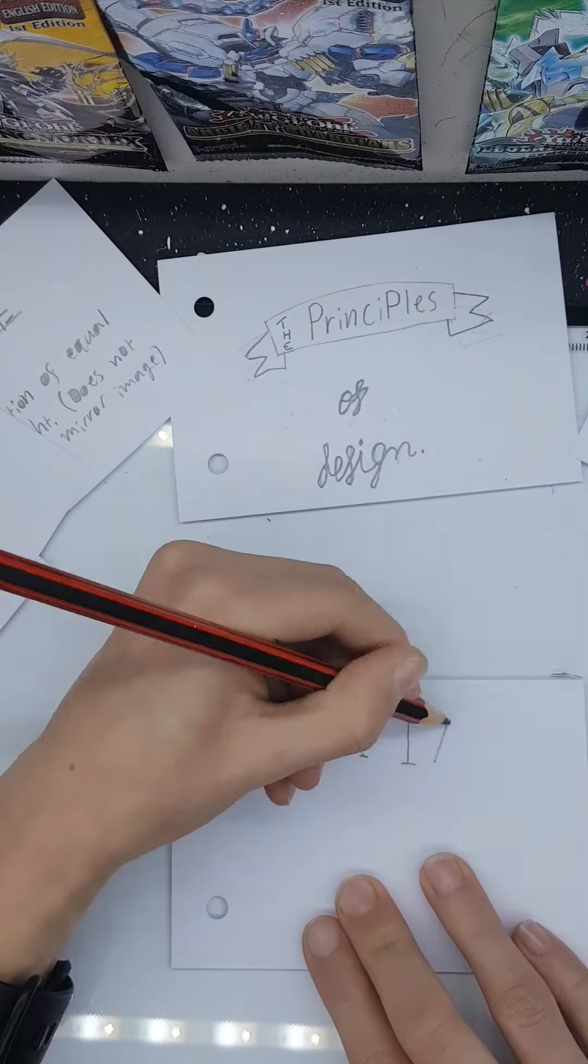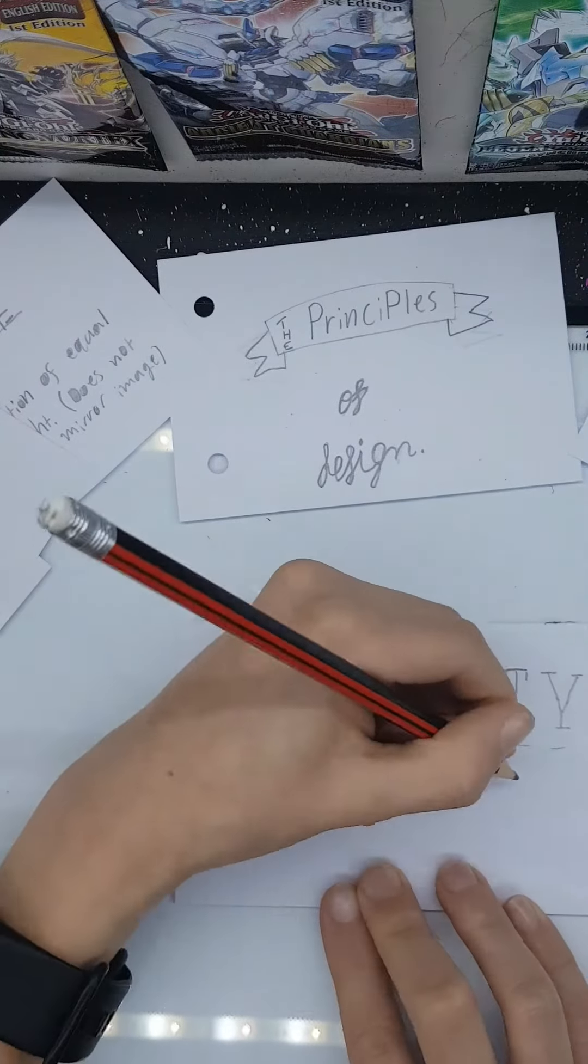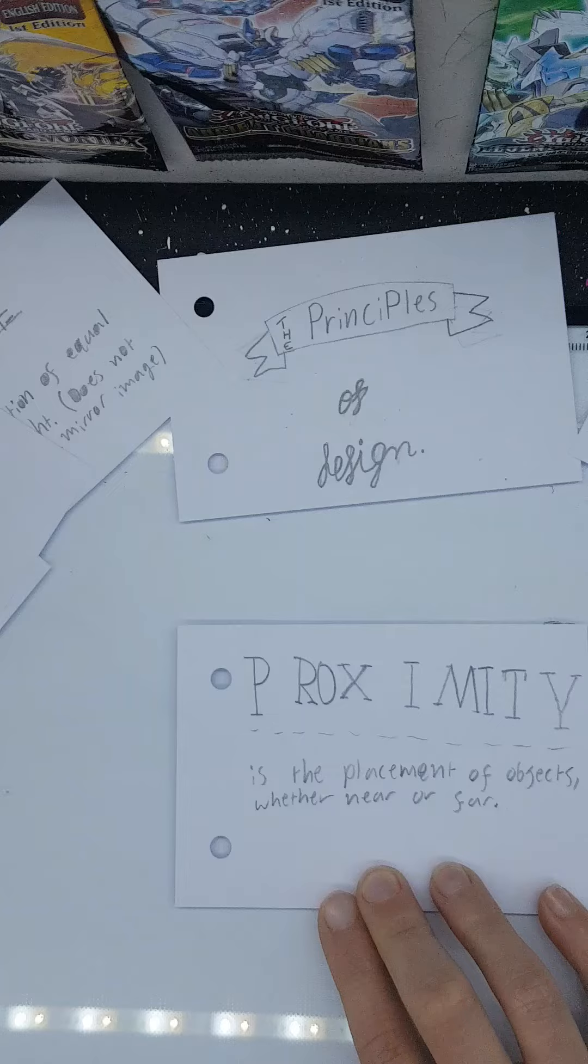Proximity is the placement of objects, whether near or far from each other. Objects very close to each other are considered a unit.